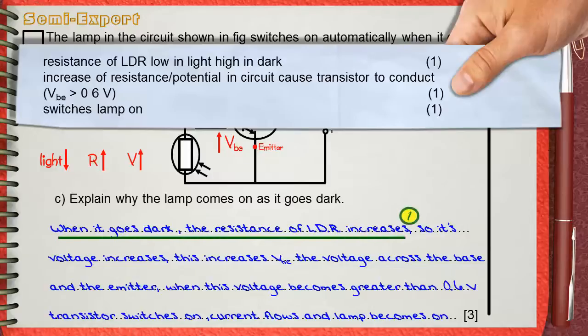The second mark is for increase of resistance potential in circuit causes transistor to conduct, he says between brackets, VBE greater than 0.6 volts.